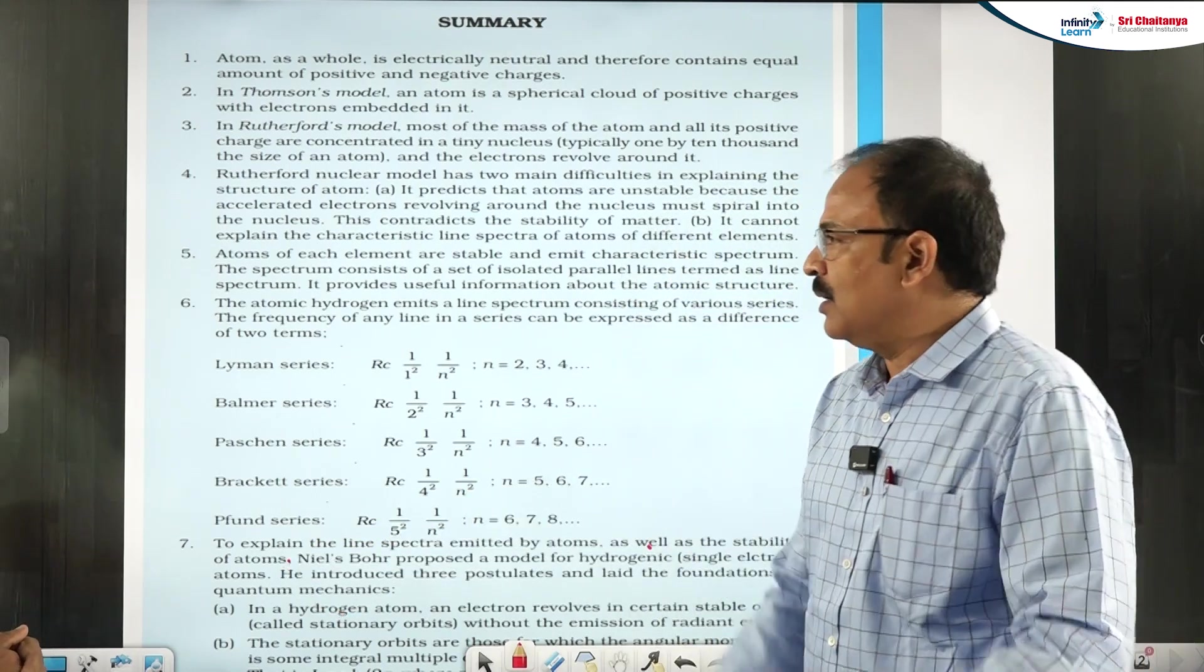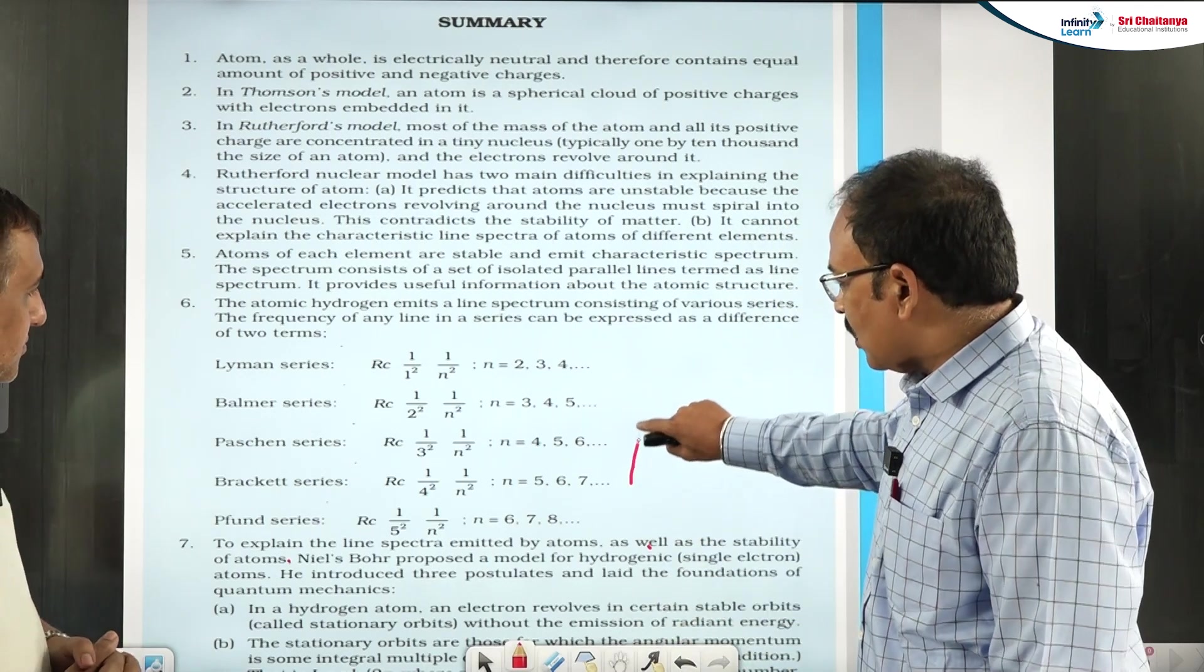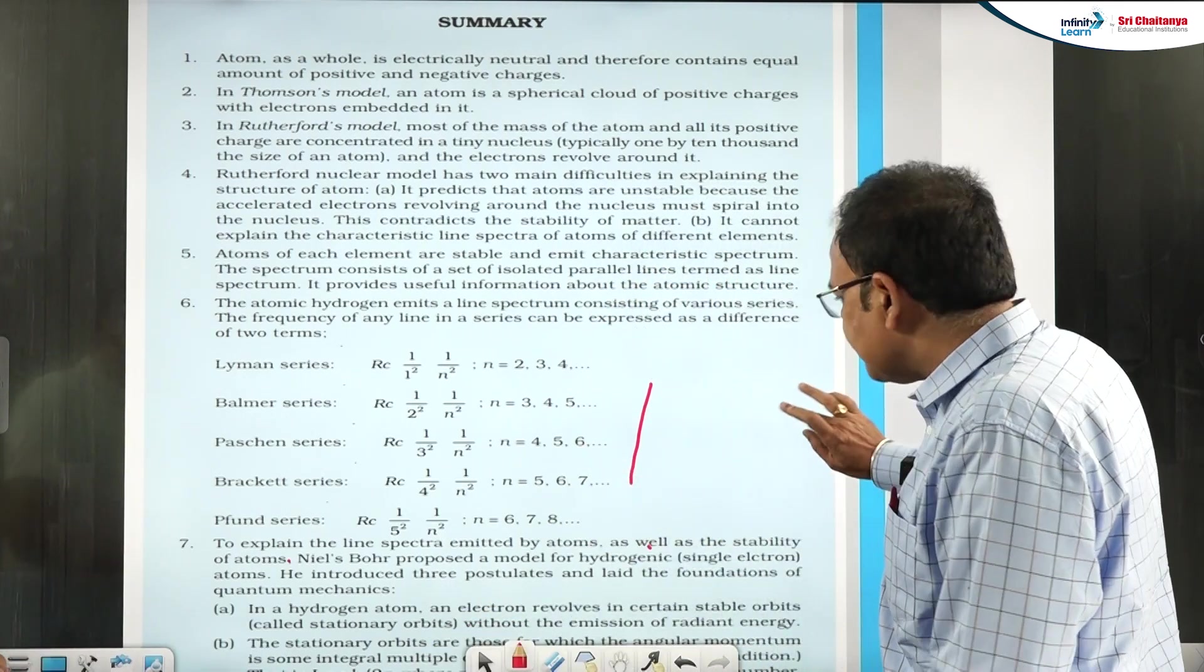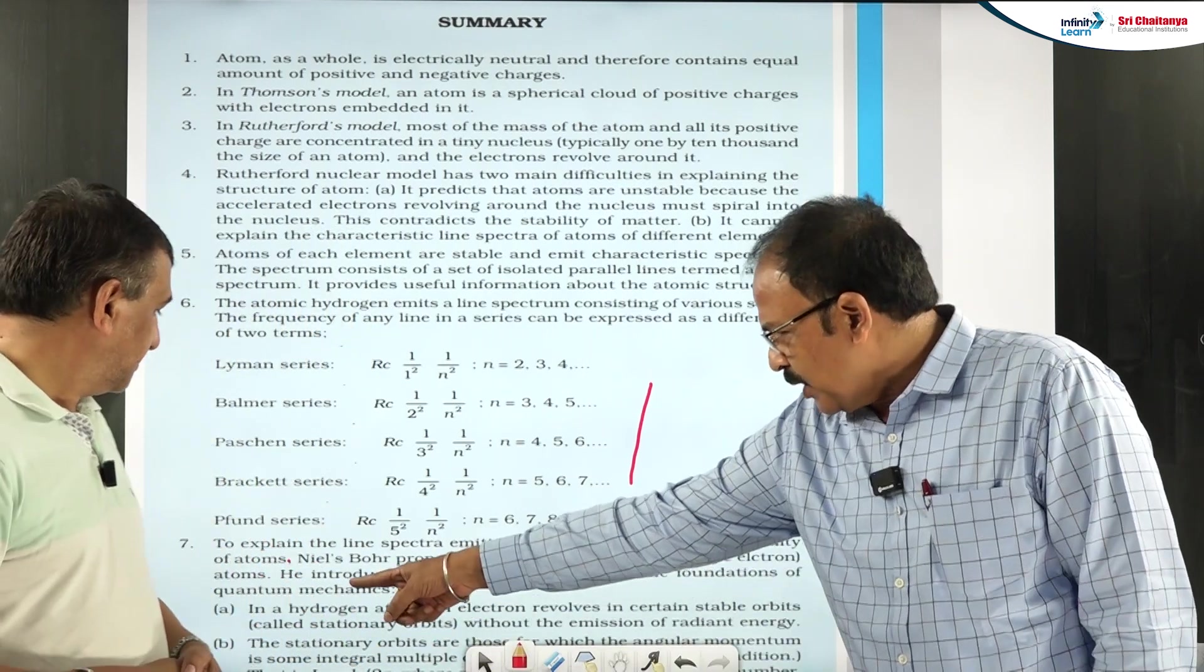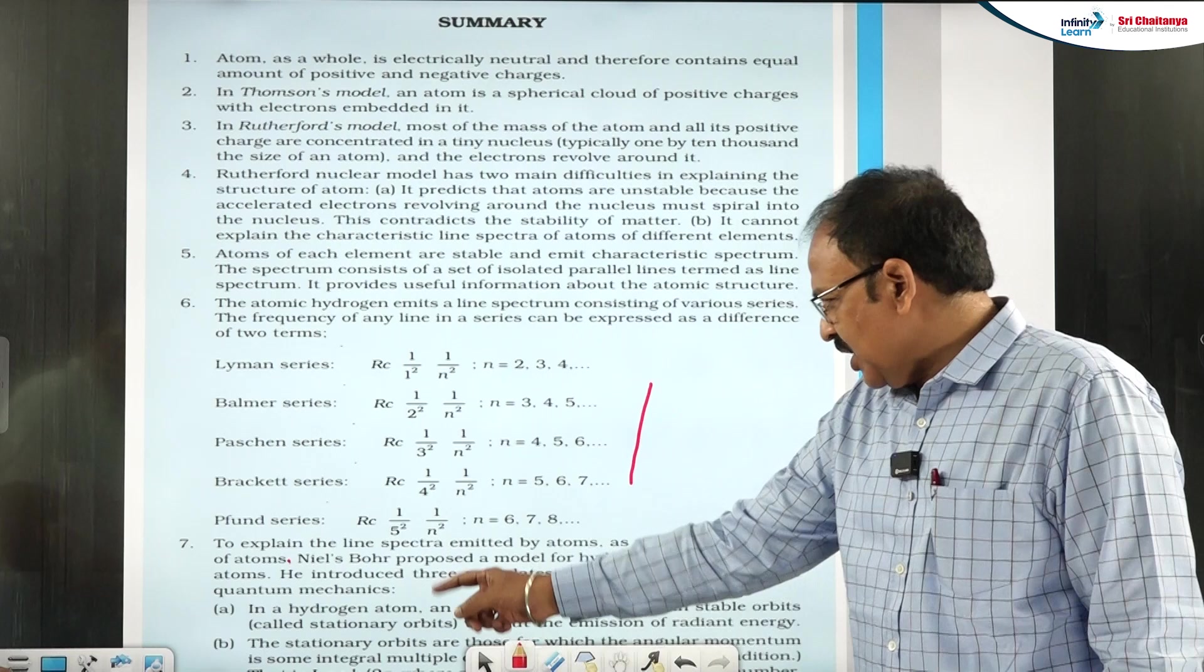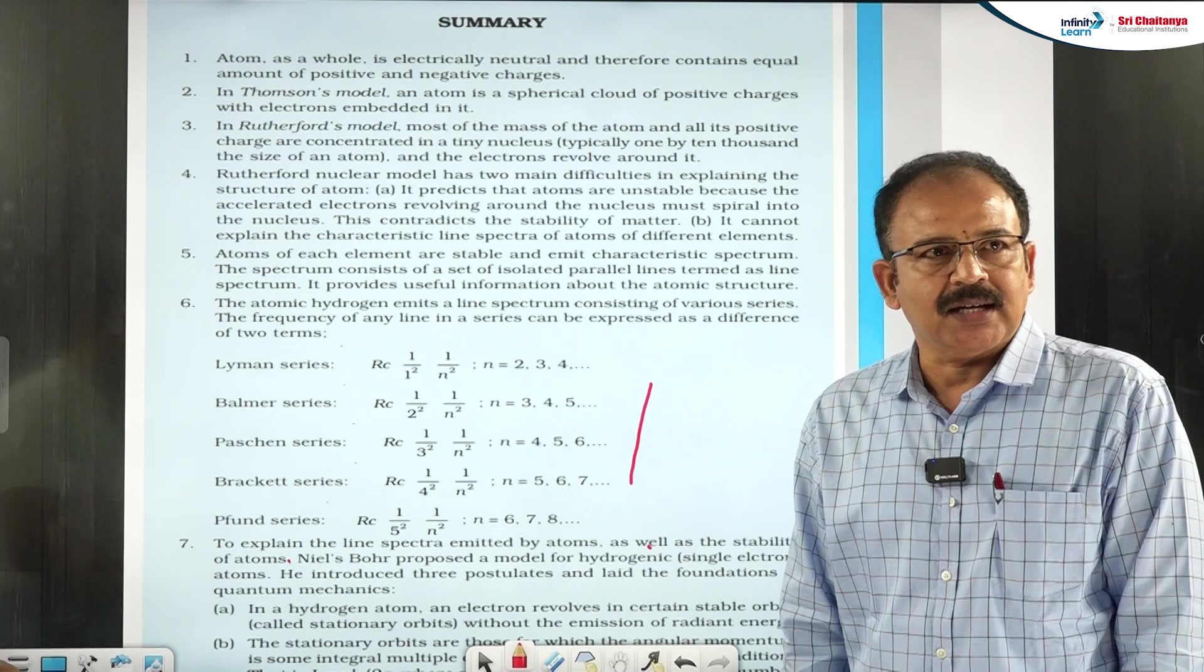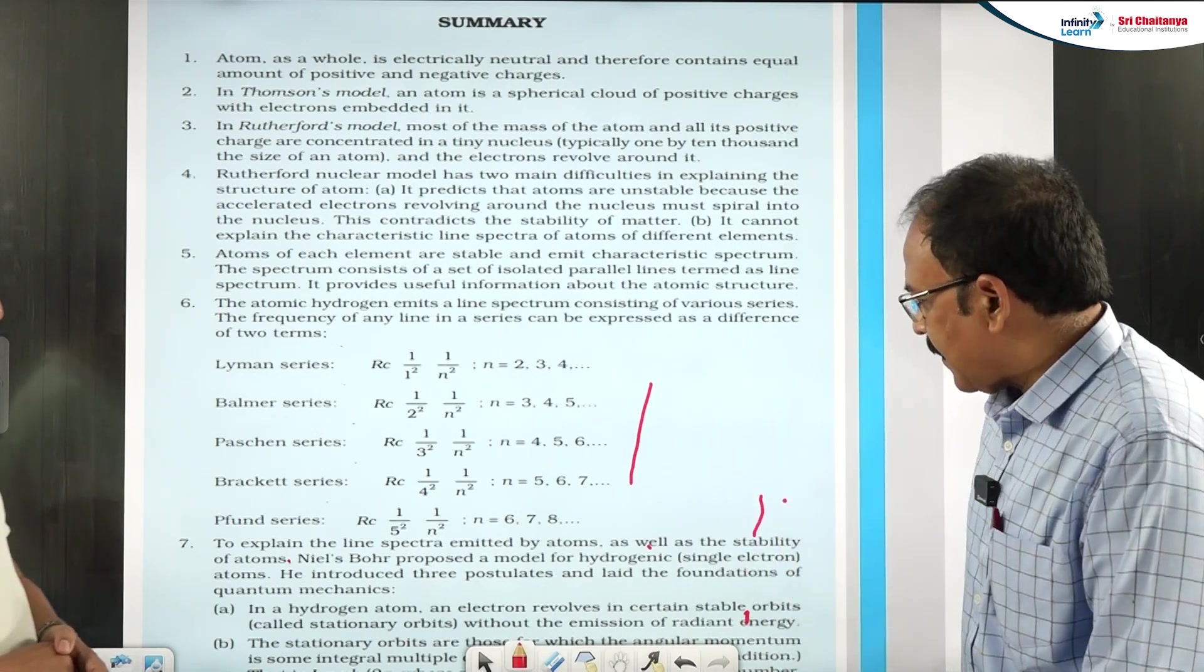So Bohr is trying to explain how the atom is stable. So according to Bohr, for these three reasons, we have to move it up this. Look at the point A in this. Because the electron moves in the stationary orbit, that is what the point says. And B says, the stationary orbits are there existing in that, stationary orbits.